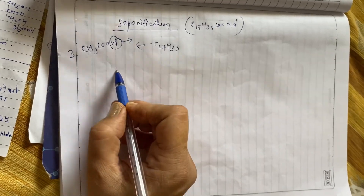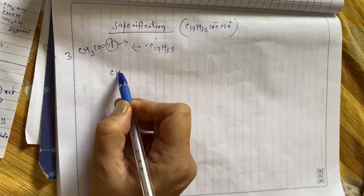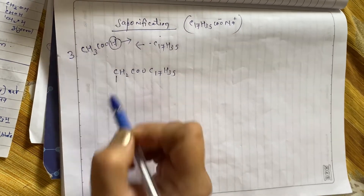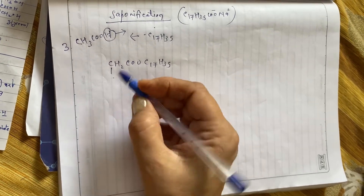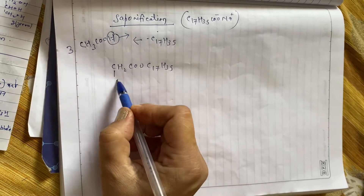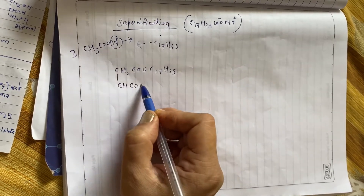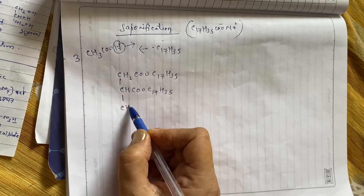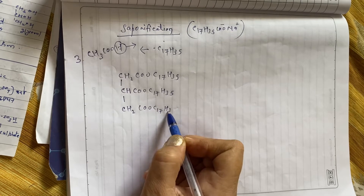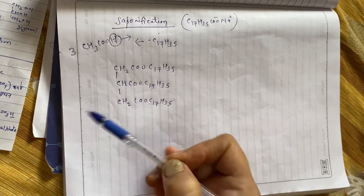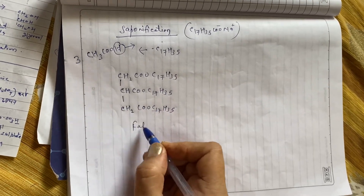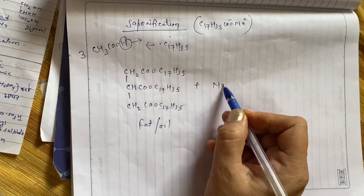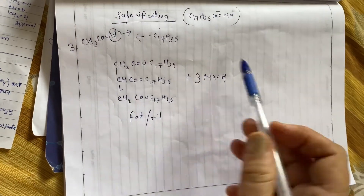Dekho kaise: ek hydrogen remove kiya — CH2, COOH gaya, aur yeh aa gaya C17H35. Yeh jo remove hua, yeh doosre acetic acid se join ho jayega. Ab yeh particle isse bhi jodega, aur ek aur neeche jodne wala hai, isliye uske 2 hydrogen loss honge. Baaki bachega: COO C17H35. Third particle lo — uska ek H remove hua, jo isse join ho jayega: CH2, COO C17H35. Teen acetic acid ke particles is tarah se modify hokar aapas mein join ho gaye — yeh hai fat ya oil ya stearic acid. Ab iski reaction karao sodium hydroxide se — 3 particles.